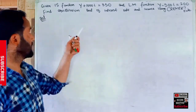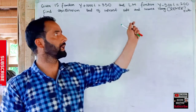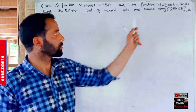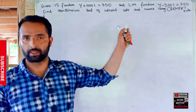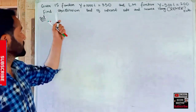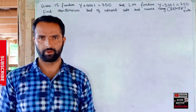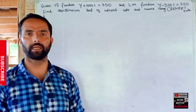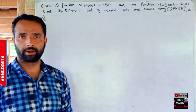The question is: given the IS function Y + 1000I = 350 and the LM function Y − 500I = 200, find the equilibrium level of interest rate and income, where Y and I are the income and interest rate respectively. IS stands for Investment-Saving and LM stands for Liquidity for Money.